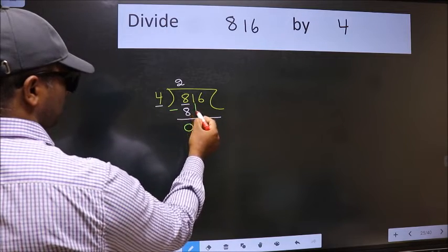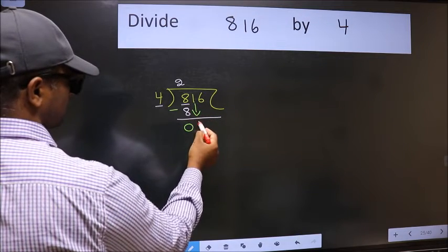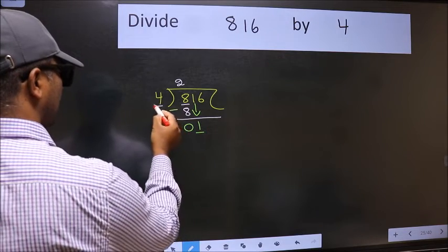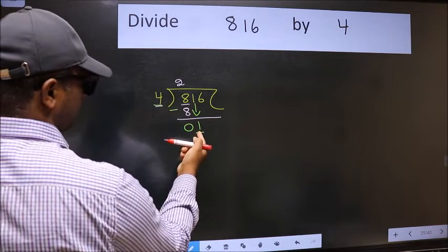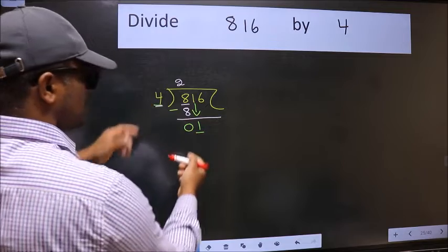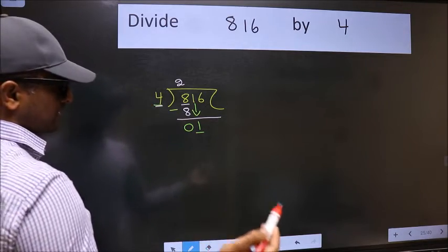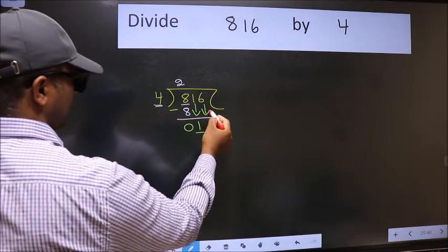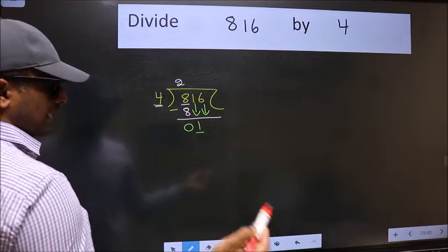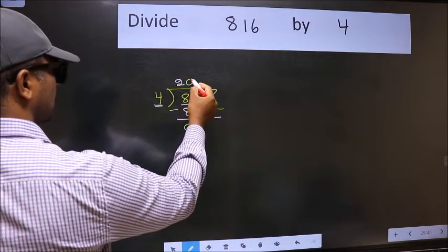After this, bring down the beside number. So 1 down. Now here we have 1 and here 4. 1 is smaller than 4. So we should bring down the 2nd number. And the rule to bring down the 2nd number is we should put 0 here. Then only we can bring this number down.